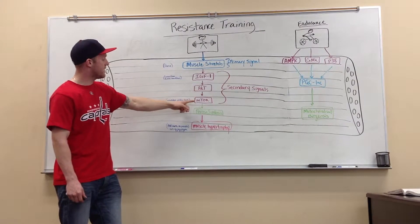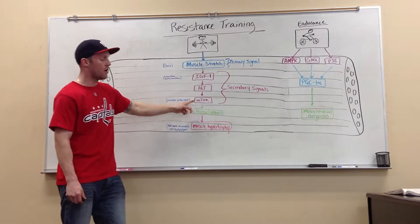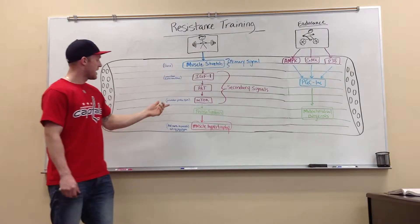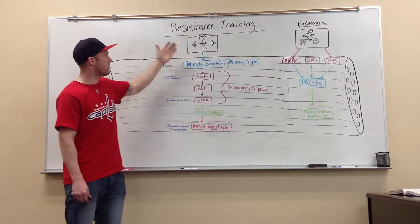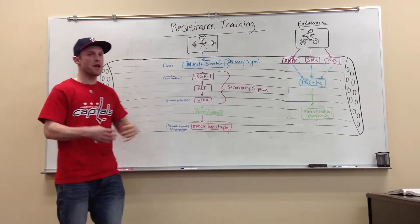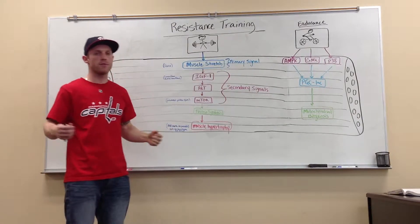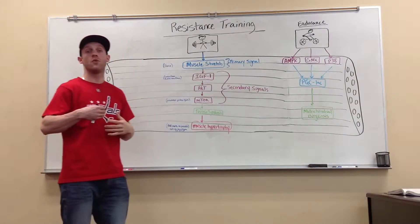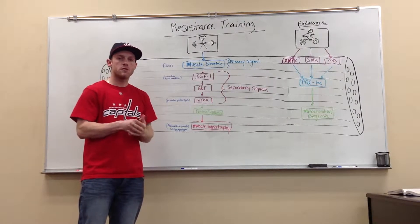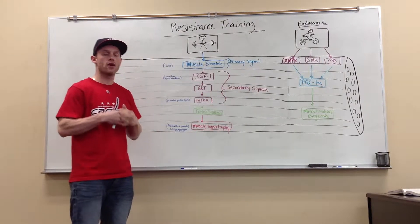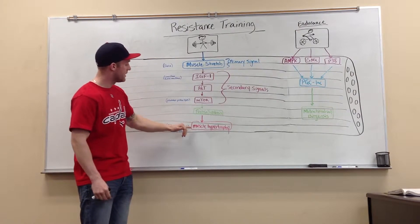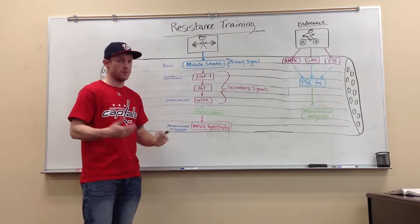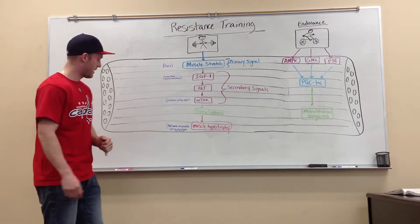So AKT activates MTOR. Now, he's important because he promotes protein synthesis, and that's what we want. When we're doing our resistance training, we're tearing our muscles apart, we're tearing the fibers. We need to replenish them. We need protein synthesis so they can get back and come back stronger, so we can have bigger gains and eventually lead to muscle hypertrophy. That would be our muscles getting bigger.